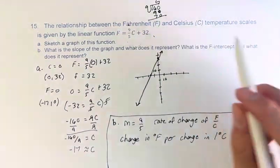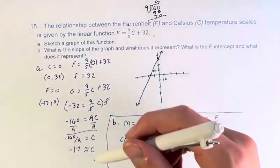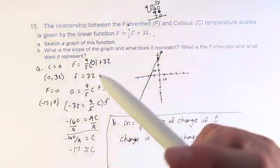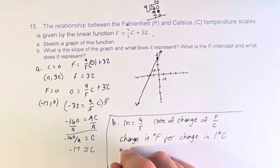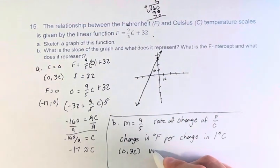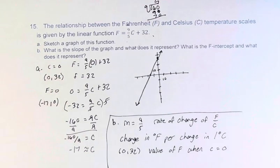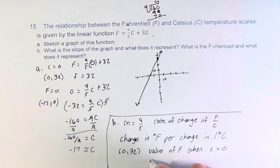What is the F-intercept and what does it represent? Well, we found that the F-intercept is 32, or (0, 32) is the point. And it is the value of F when C equals 0. So therefore, it is the degrees Fahrenheit when it is 0 degrees Celsius.